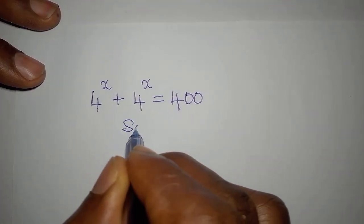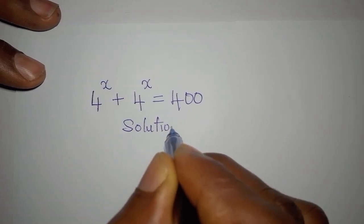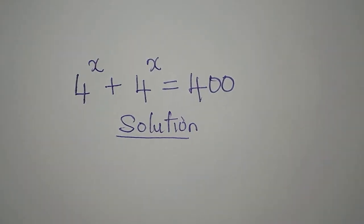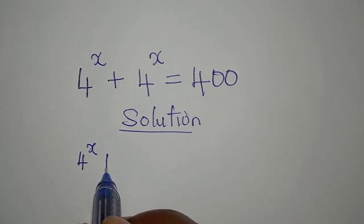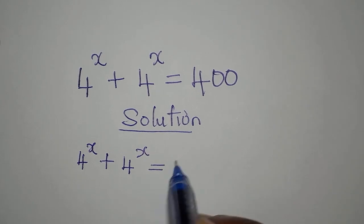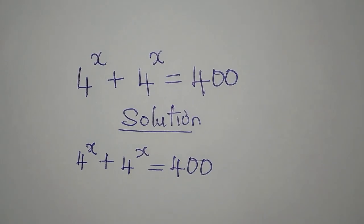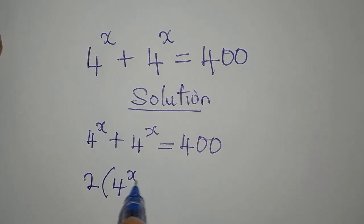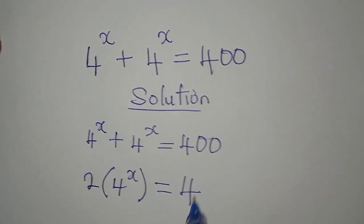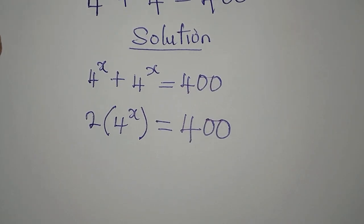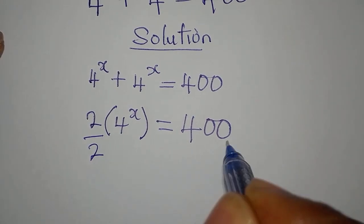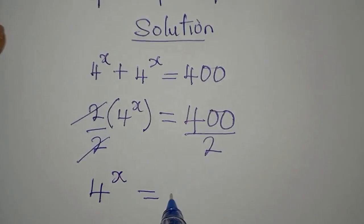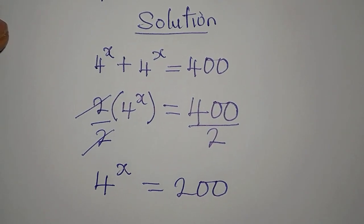Let's provide a solution to this problem: 4 to the power of x plus 4 to the power of x equals 400. Let's add these two to get 2 times 4 to the power of x, and this is equal to 400. The next step is to divide both sides by 2, so 4 to the power of x will be equal to 200.